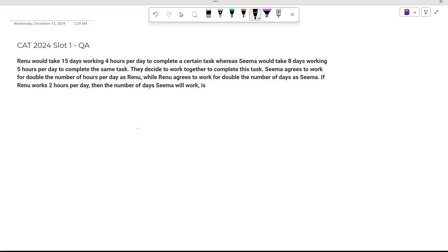Let's solve this question. This is a PYQ of CAT 2024 Slot 1. It's given that Renu would take 15 days working 4 hours per day to complete a certain task, whereas Sima would take 8 days working 5 hours per day to complete the same task. Let's interpret this given info and then proceed further.